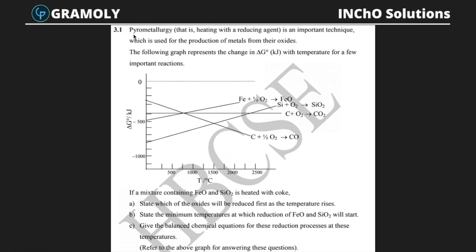Problem 3.1 — pyrometallurgy, that is heating with a reducing agent, is an important technique used for the production of metals from their oxides. The graph represents the change in Delta G with temperature for a few important reactions. What they're asking is if a mixture containing FeO and SiO₂ — and by the way, these diagrams are called Ellingham diagrams.